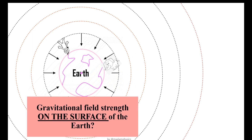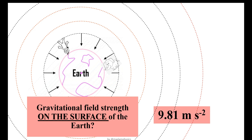Do you know the value of gravitational field strength on the surface of the Earth? Any object located on the surface of the Earth will have the same strength of gravity, which has a value approximately equal to 9.81 metres per second squared.